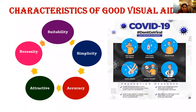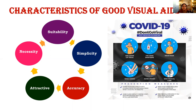Now we will see the important characteristics of good visual media. The first one is suitability — whenever preparing a visual aid, check whether it is suitable for your communication process, for the audience, or for the objective of communication. For example, if the objective is to create awareness among the farming community, the visual medium to use would be a poster. The first important factor is suitability for that particular communication process.